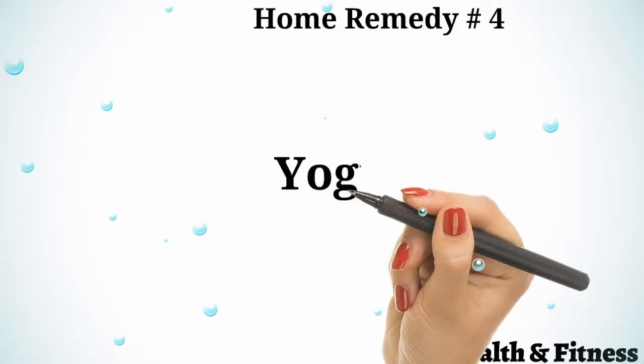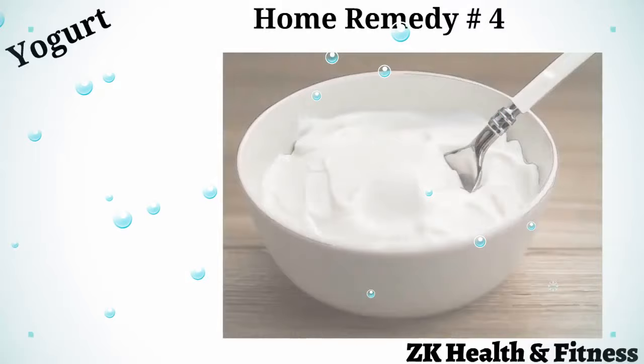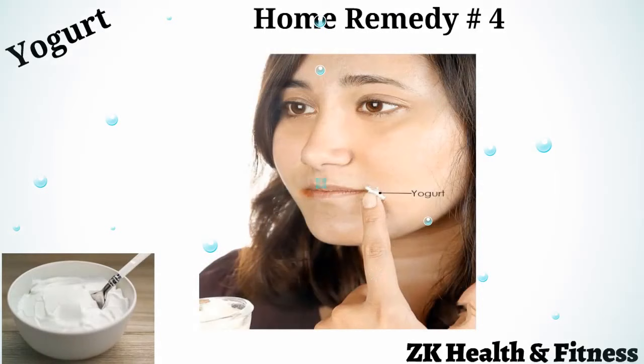Home Remedy 4: Yogurt. Yogurt that contains live cultures of healthy bacteria will help decolonize the invading pathogens and restore the natural flora in your body. Apply plain yogurt containing live cultures on the corners of your mouth and leave it on overnight. The next morning, rinse it off with lukewarm water, pat dry, and reapply.